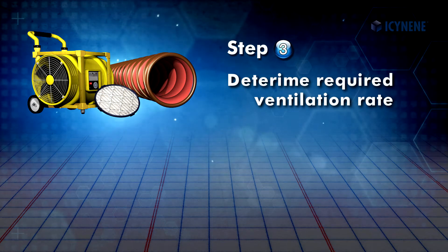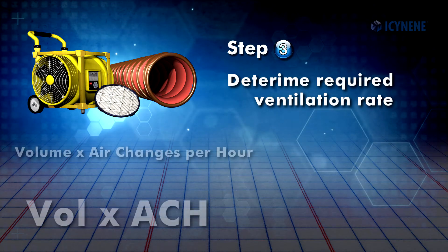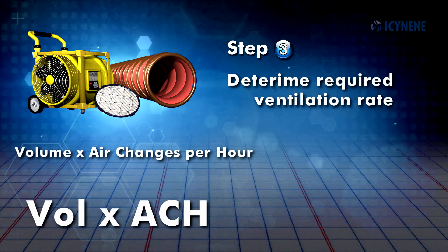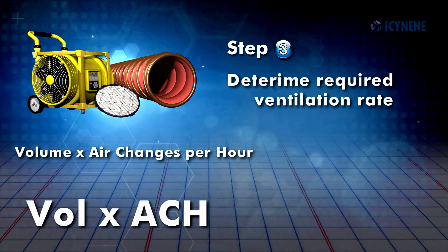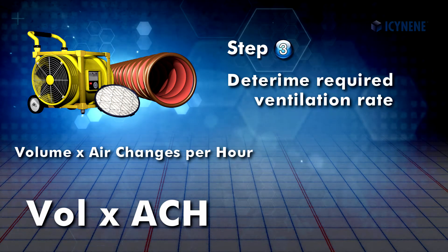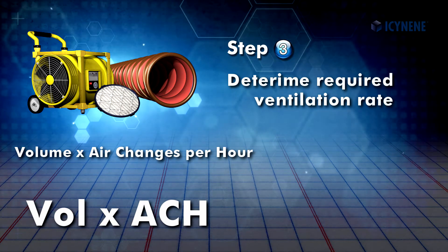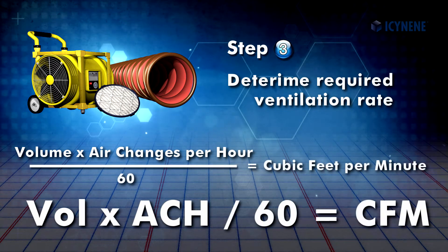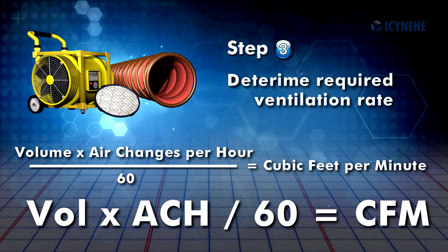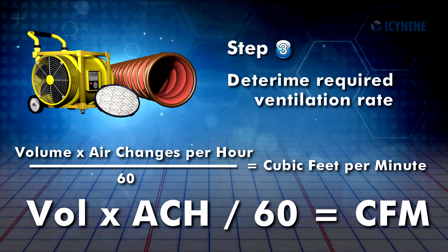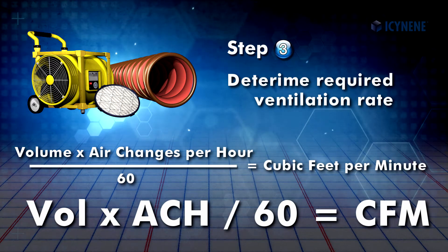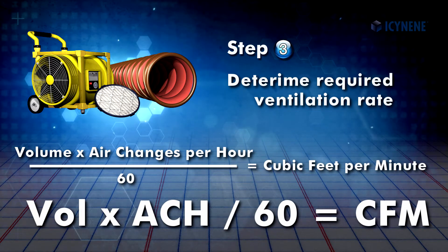To determine the required ventilation rate, multiply the volume calculated in the previous step by the desired air changes per hour, or ACH. Then divide this value by 60 to get the minimum required fan size in cubic feet per minute, or CFM.